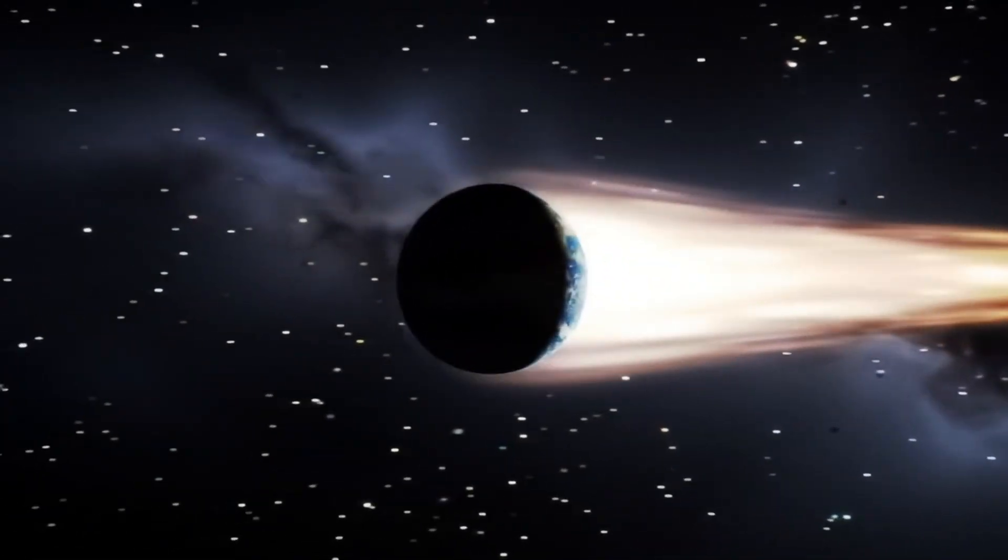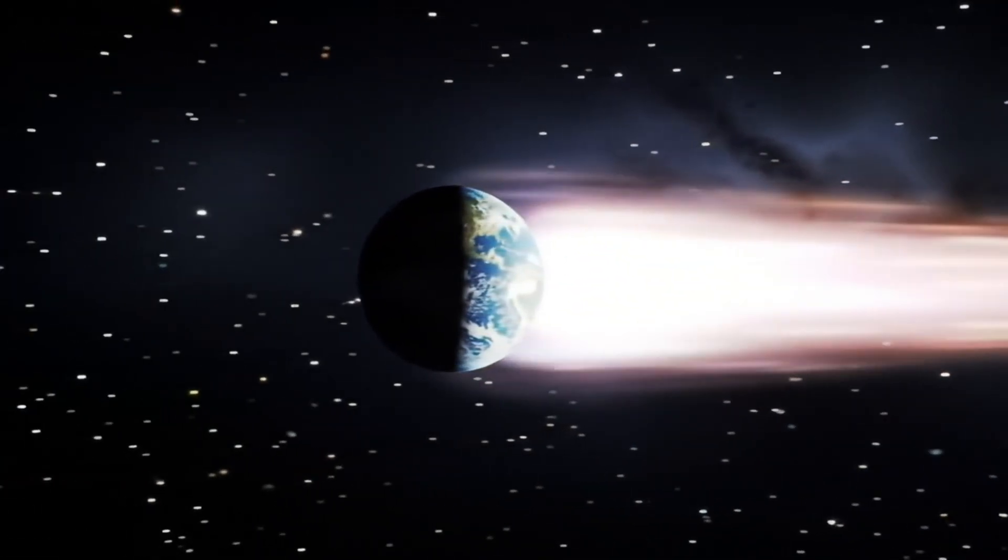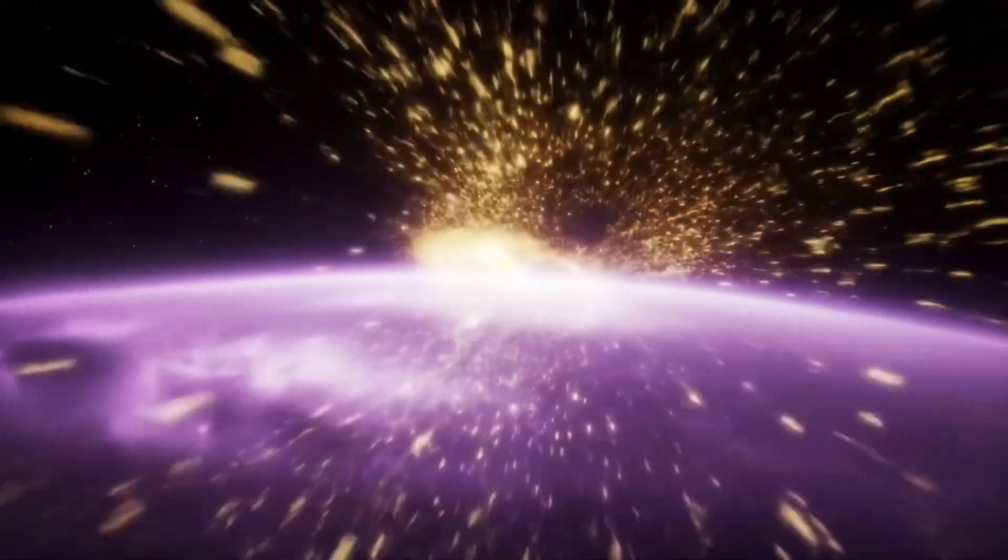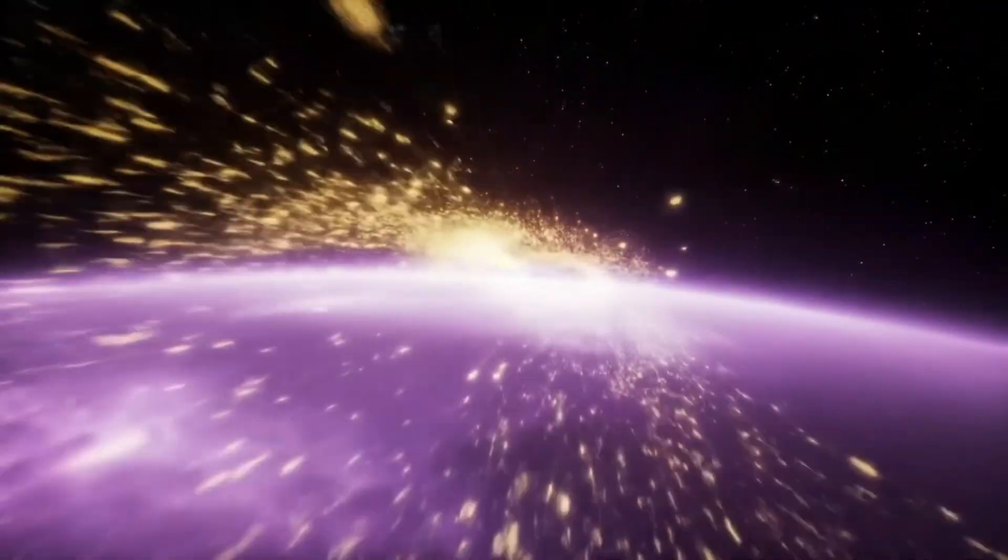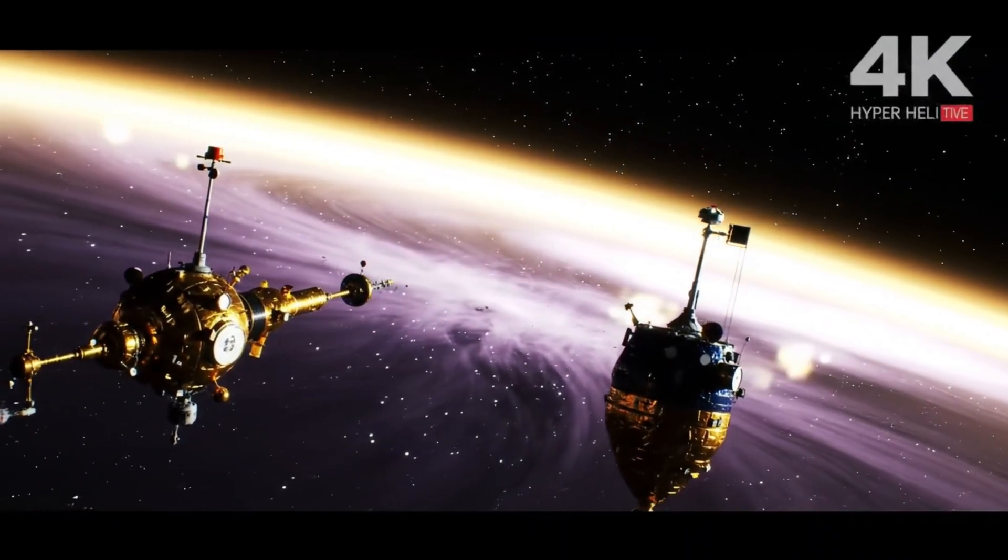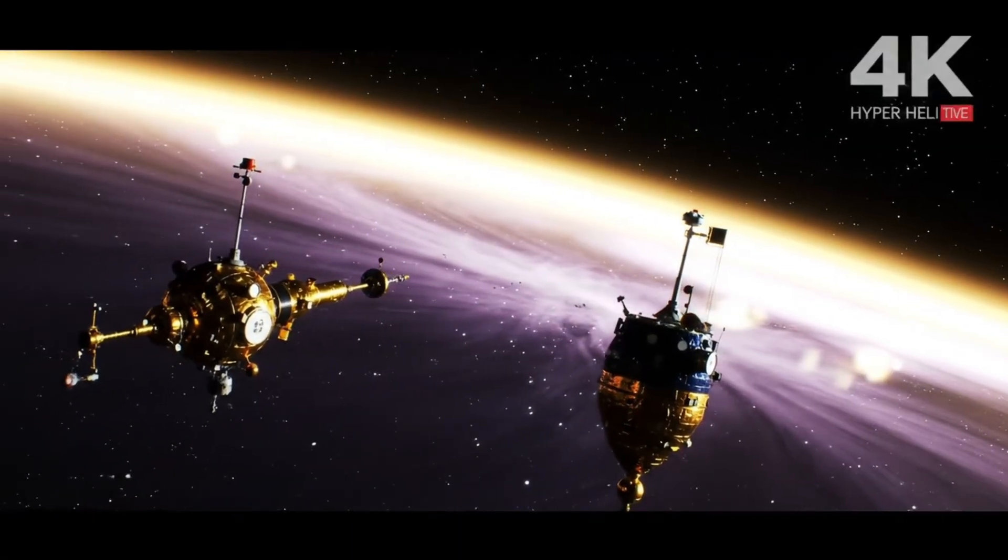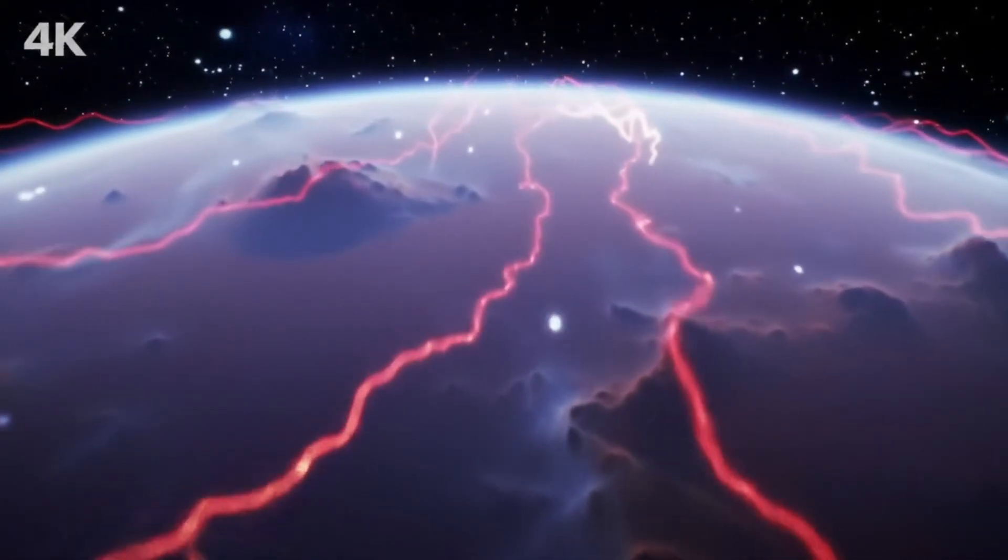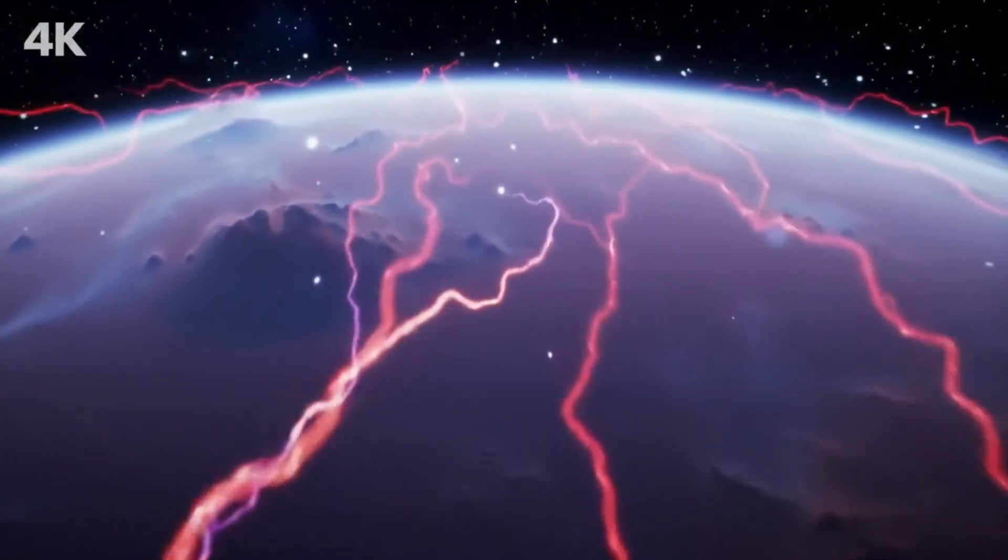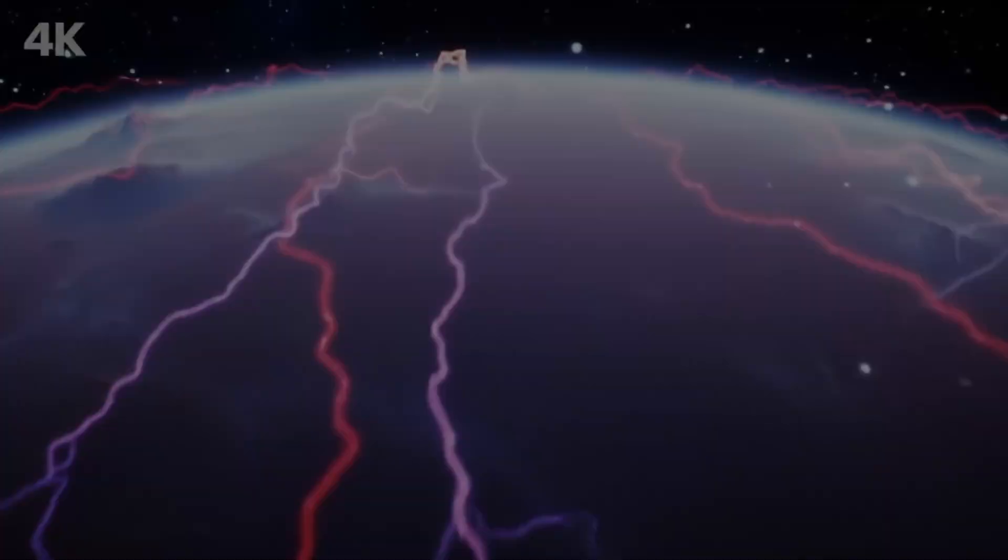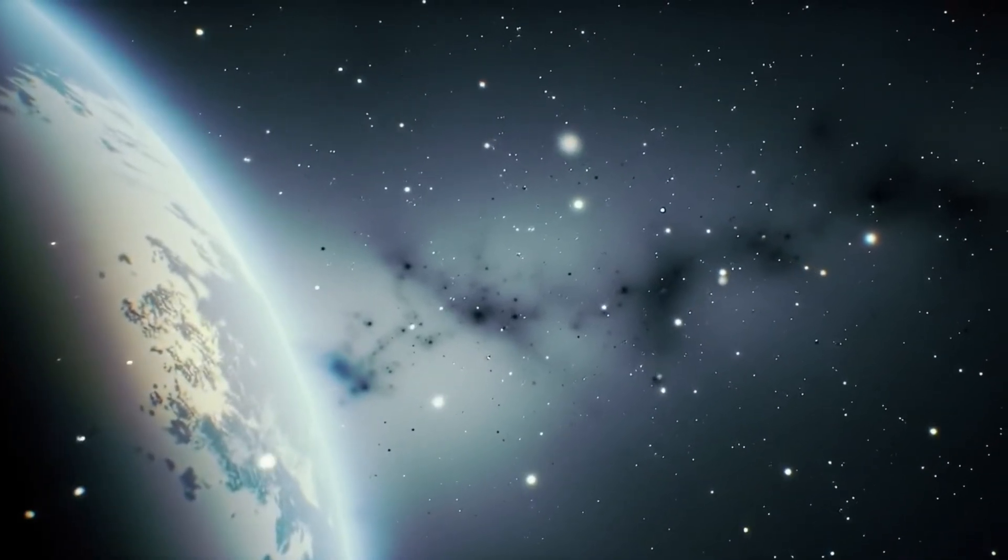Now, let's zoom out even further to the Oort Cloud. This is one of the coolest and most mysterious parts of our solar system. Picture a massive, spherical shell of icy objects surrounding the entire solar system, like a snow globe. According to the European Space Agency, the Oort Cloud might stretch from 2,000 to 100,000 astronomical units, potentially a quarter of the way to the nearest star, Proxima Centauri.